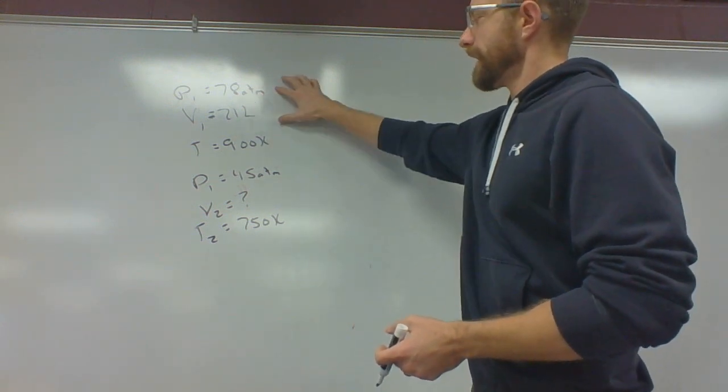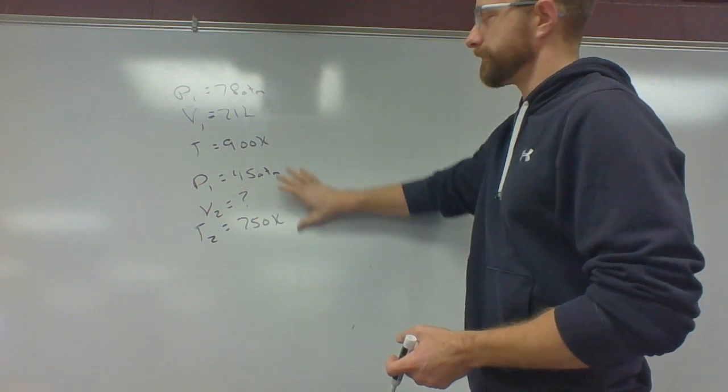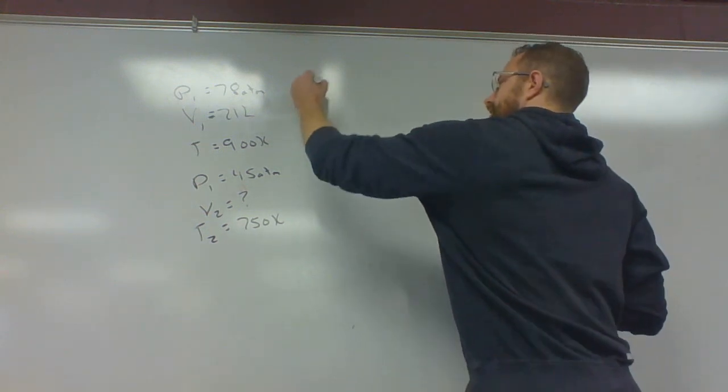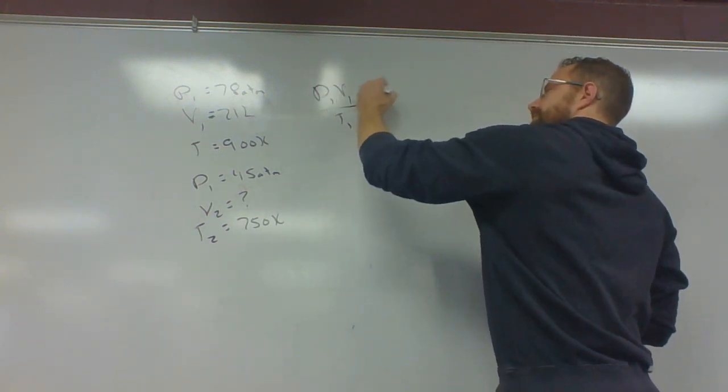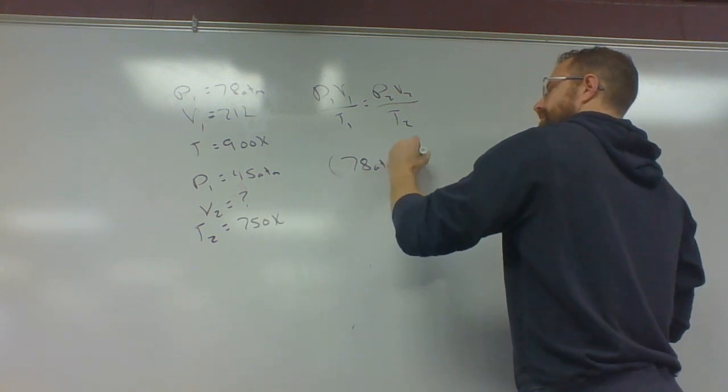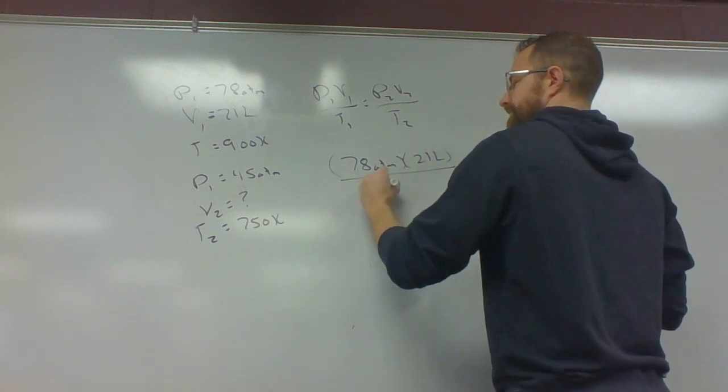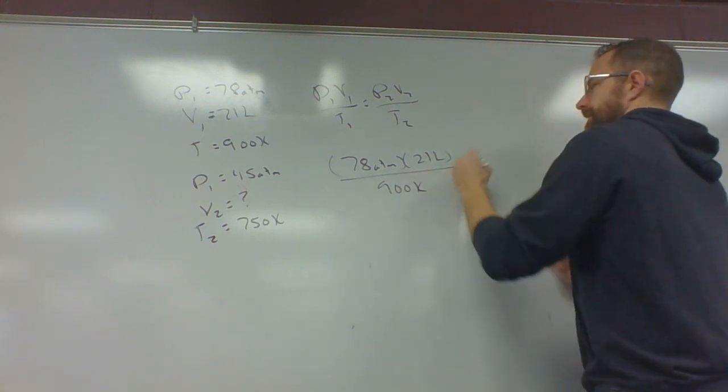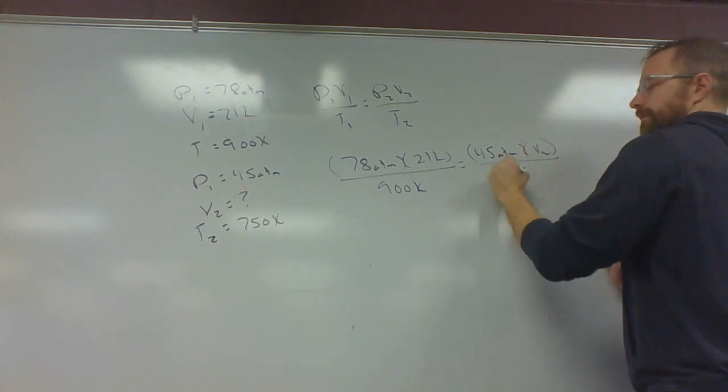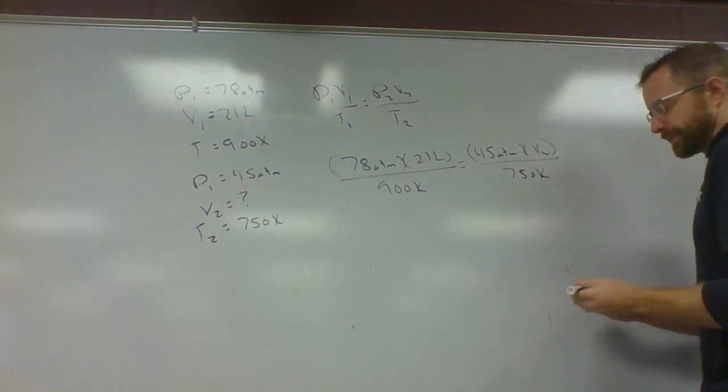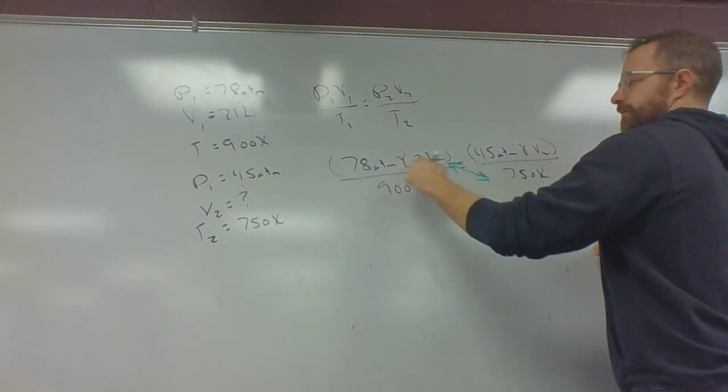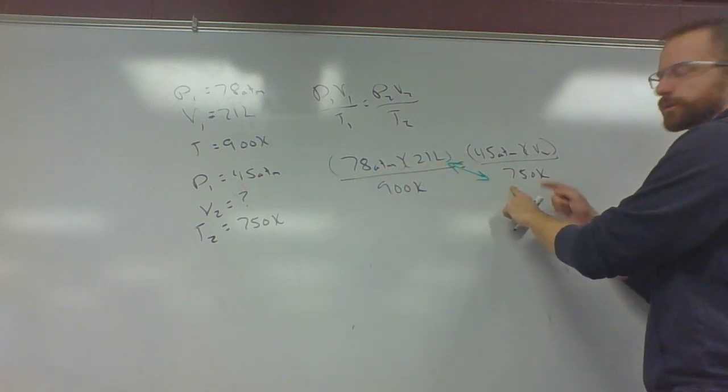So if we make our list, and that gives us a chance to check units, is everything going to cancel? Atmospheres, atmospheres. Liters, my answer is going to be in liters. Kelvin, Kelvin. So everything is going to cancel nicely as we do that. So P1 V1 over T1 equals P2 V2 over T2. Then I just plug in 78 atmospheres times 21 liters divided by 900 Kelvin equals 45 atmospheres times V2 over 750 Kelvin. Then I just cross-multiply and divide. I'm going to skip some of the steps this time. But I'm going to multiply these three, and then I divide by the two that are attached to the V2. So multiply, multiply, multiply, divide by, divide by.